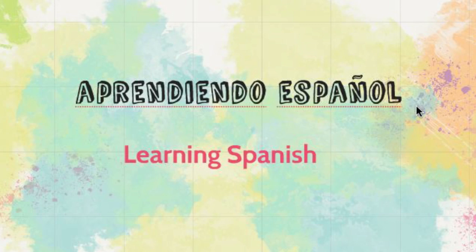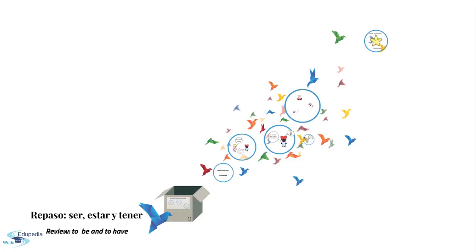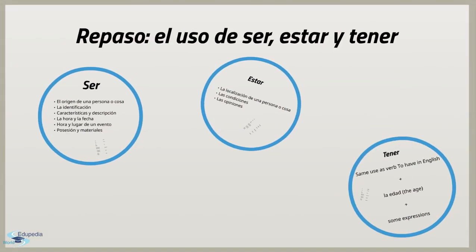Hello friends and welcome to idopediaworld.com. In today's video we are going to do a small review of the verbs we have seen so far: to be and to have — ser, estar y tener. The first review, or repaso, would be el uso de ser, estar y tener — the use of to be and to have. This way you'll have the three verbs in one video so it would be easier for you to go back to them.